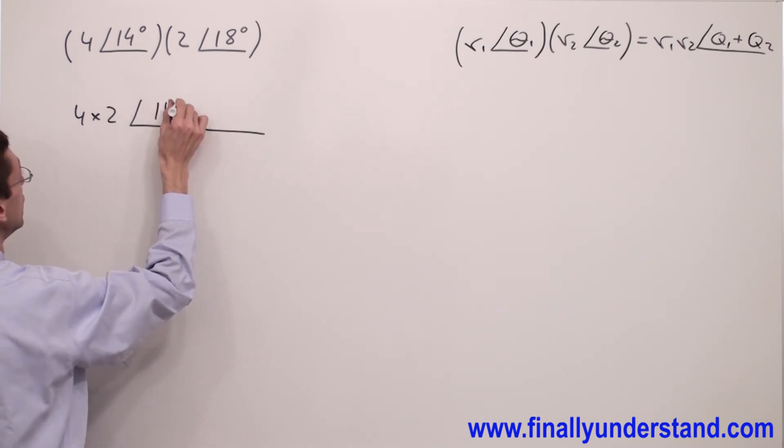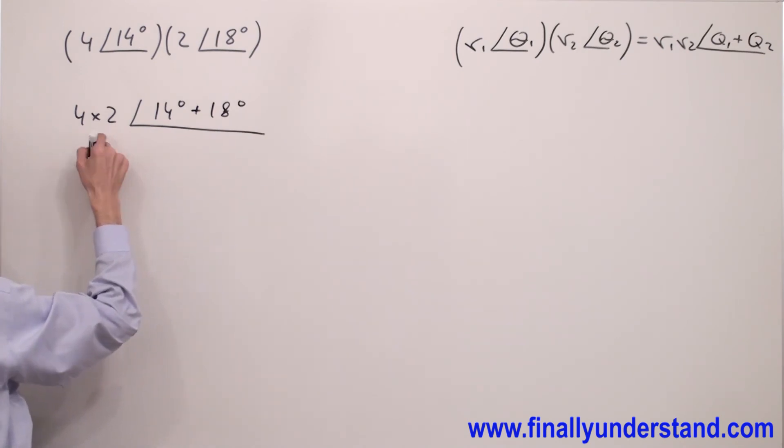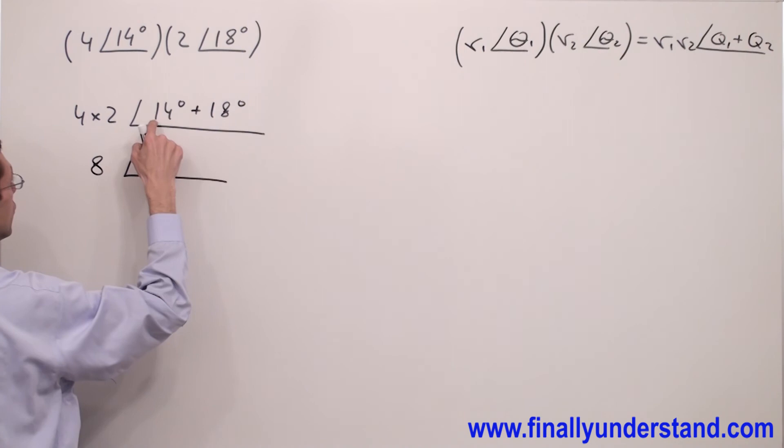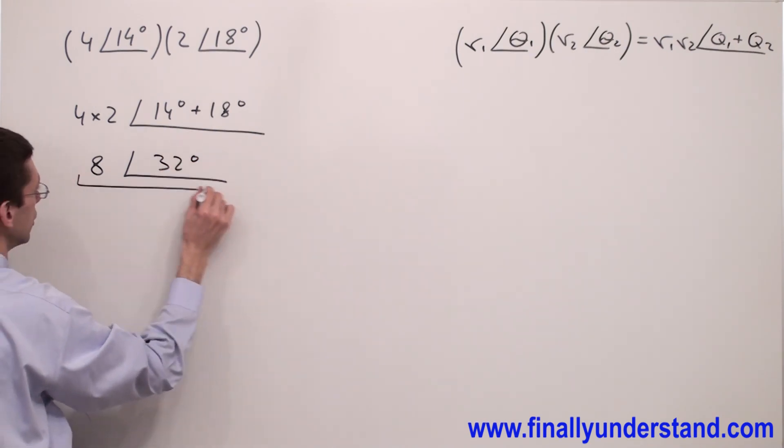I have 14 degrees plus 18 degrees. Four times two equals eight. And 14 degrees plus 18 degrees equals 32 degrees. This is the solution to my problem.